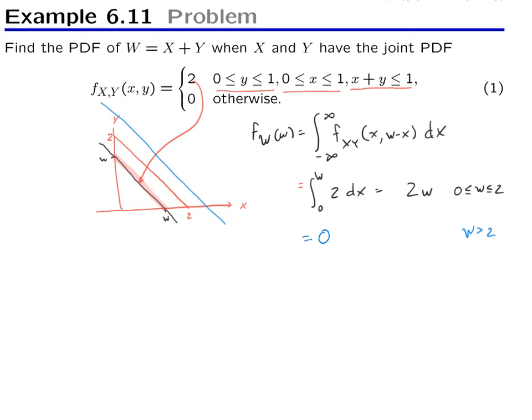And similarly for w less than zero, we would have a situation like this. For example, this is where x plus y is equal to w but w is less than zero. And then once again, this line doesn't cross the region where this PDF was non-zero, and so again we obtain zero.